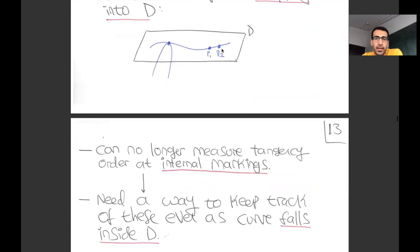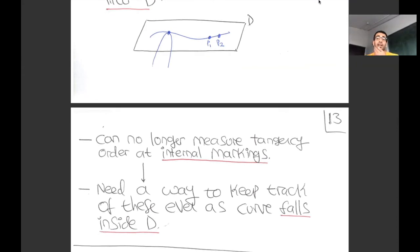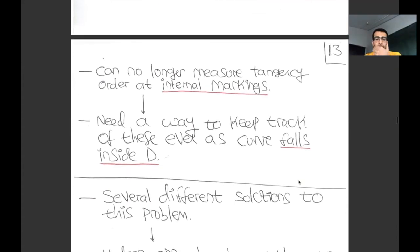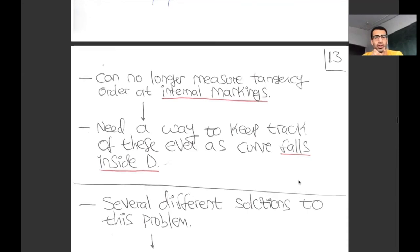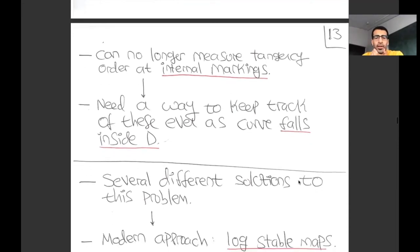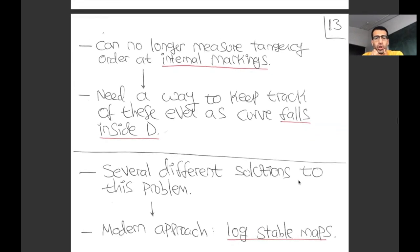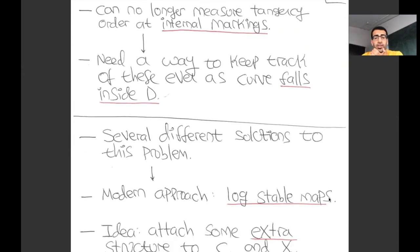The problem is that if I look at a component that's inside the divisor and pull back the equation of the divisor, it vanishes identically on that component—I can no longer measure tangency order at these internal markings. What I would like is a way to keep track of these tangency orders even as the curve falls inside the divisor. There are several different solutions to this problem which have been proposed over the last 20 years; I'm going to talk about the modern approach, which is log stable maps.